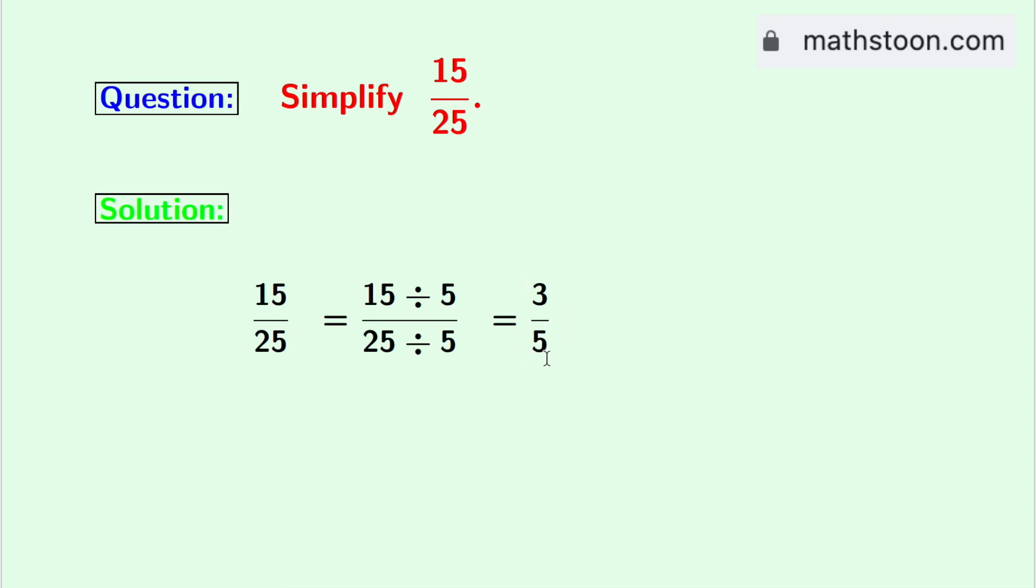As there is no divisor which can divide both 3 and 5, we cannot simplify it further. Therefore, 3 by 5 is the simplified reduced form of the fraction 15 divided by 25. And this is our final answer.